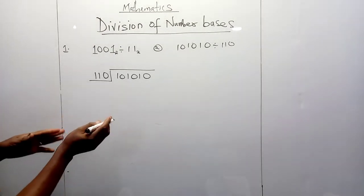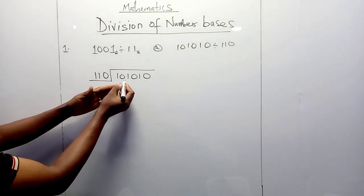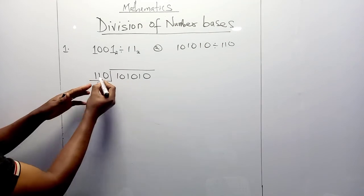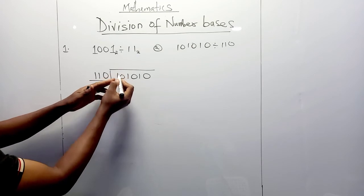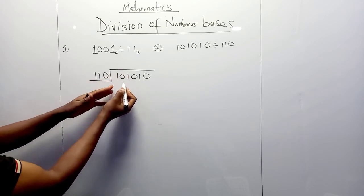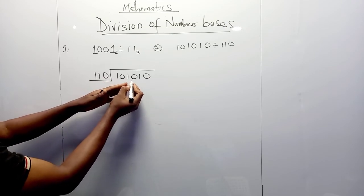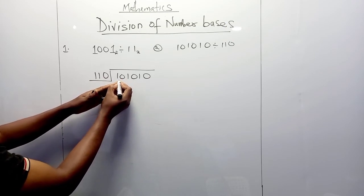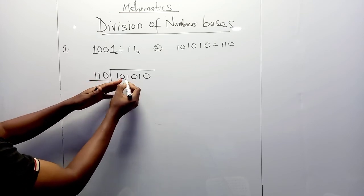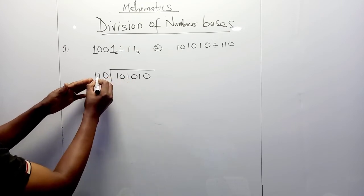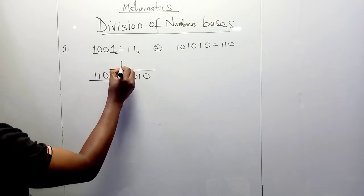The next question has a three-digit divisor dividing a larger number. We have 101010 divided by 110 in base 2. The first three digits 101 are less than 110, so we move to the first four digits, which gives us 1010. Since 1010 is bigger than 110, we write 1.